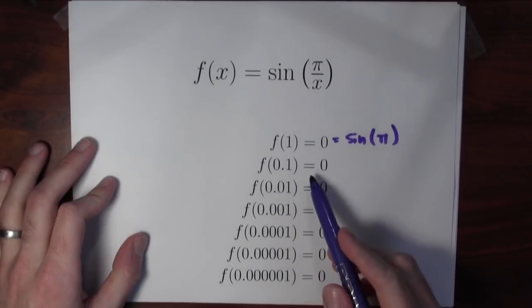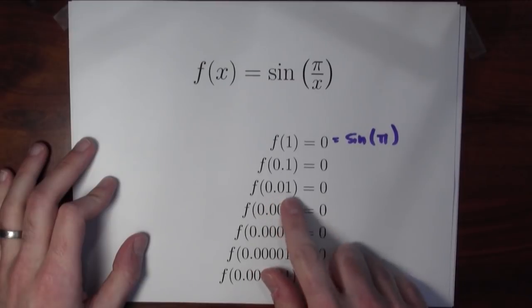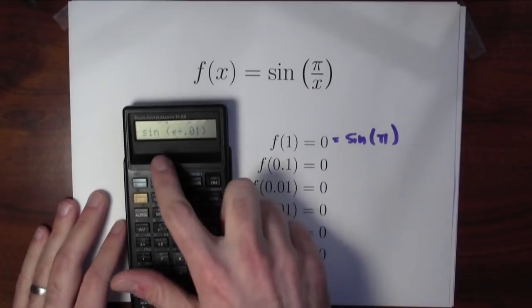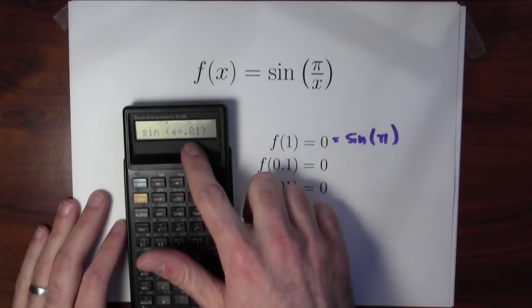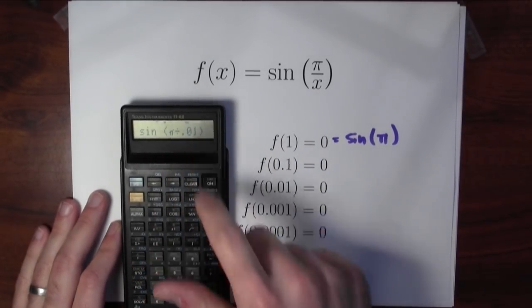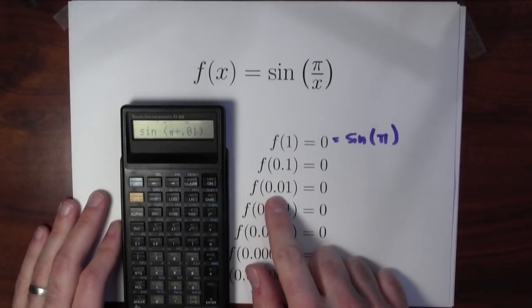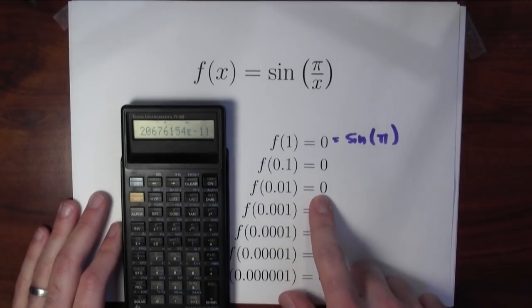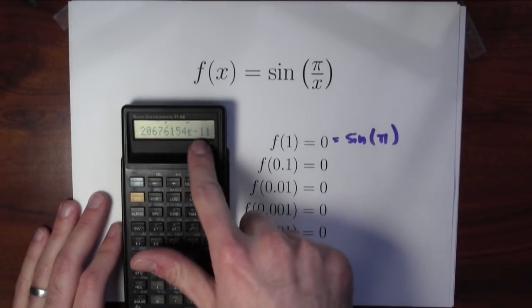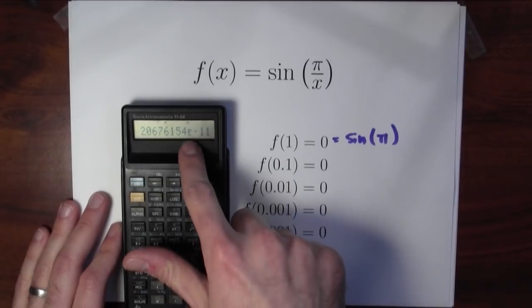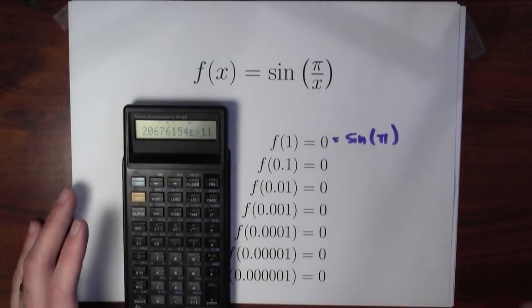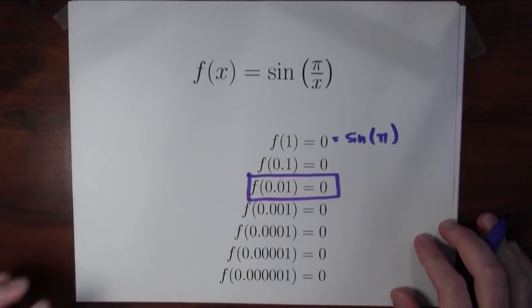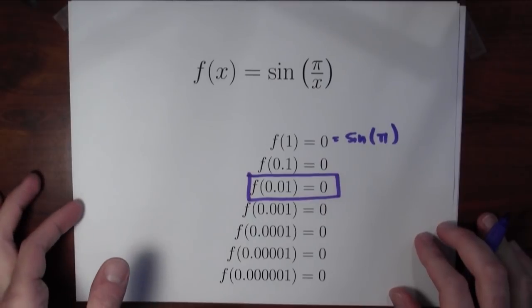What about the function at 0.1? I'm claiming that's also equal to 0. The function at 0.01, that's also 0. This can be kind of confusing. Here, I've typed in sine pi divided by 0.01 onto my calculator. This is calculating the function's value at 0.01. If I ask my calculator to do this, it is not telling me the answer is 0. The calculator's giving me this, admittedly a very small number, E negative 11 here, but it's still not actually 0. So can I convince you that this is even true, that the function's value at 0.01 actually is equal to 0?